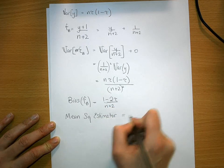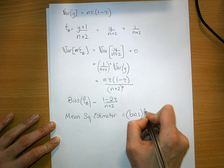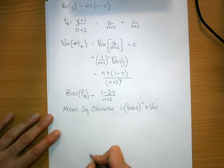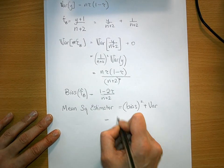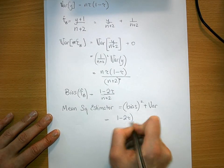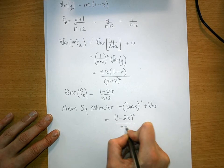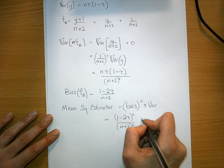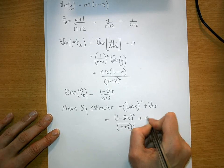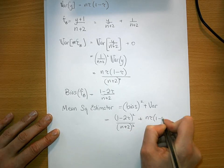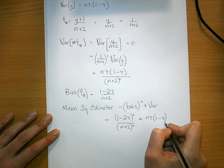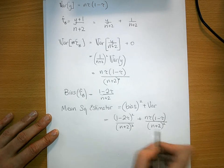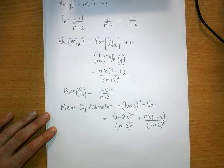That's the bias squared plus the variance. So in this case, (1-2*tau)^2/(n+2)^2. Oh, that's quite nice, because we have plus n*tau*(1-tau)/(n+2)^2 - the same denominator, so it becomes quite an easy sum.